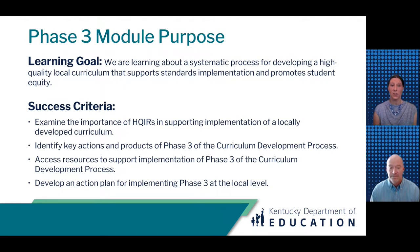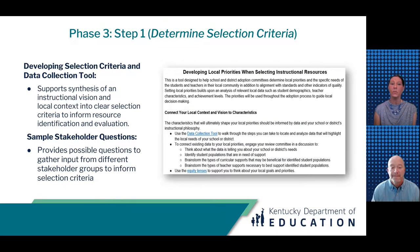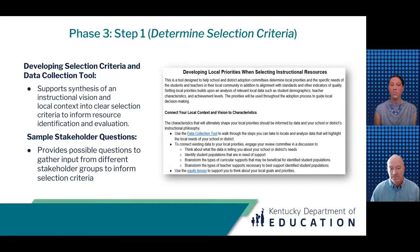Let's move into our third success criterion: accessing resources to support implementation of Phase 3. While there are several tools included in the CDP, we want to highlight a few key tools that may be most useful. At its best, a successful adoption process begins with identifying clear selection criteria. The developing local selection criteria and data collection tools work together to help the team ground the selection criteria in their instructional vision. Another useful tool is the sample stakeholder questions, which offers a range of possible questions for three key groups — teachers, families and communities, and students — to help ensure that multiple perspectives inform the selection criteria.